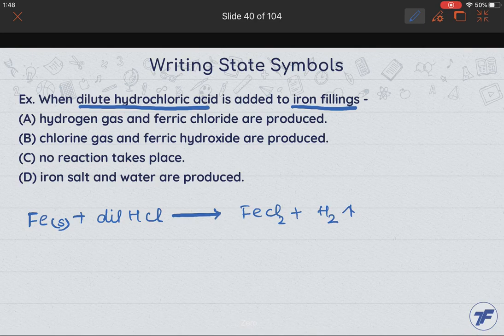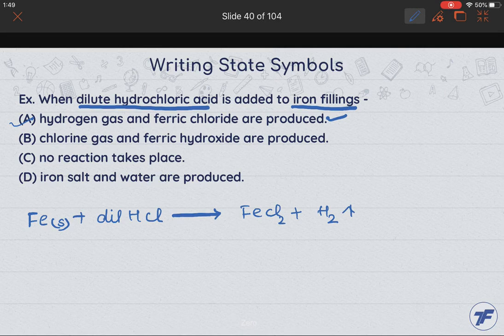What is the first option? Hydrogen gas and ferric chloride is produced. Yes, it is the correct one. Then chlorine gas and ferric hydroxide. No, it is not a true statement. No reaction takes place. It is also not the correct one.